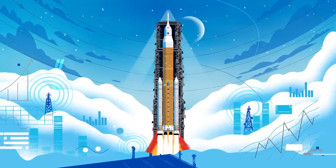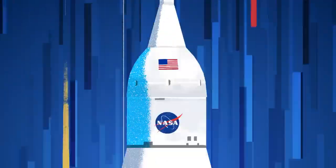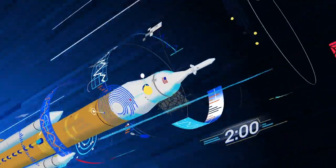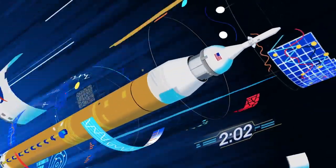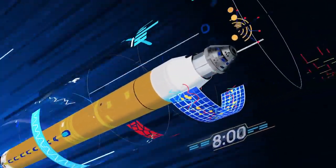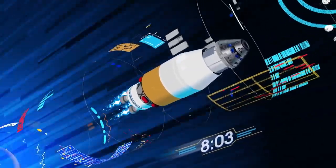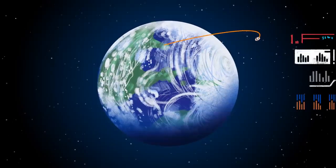All four RS-25 engines and the two solid rocket boosters come to life, thundering our crew upwards. Two minutes after ignition, the solid rocket boosters are spent and released. Eight minutes after launch, the core stage is depleted and separated. The upper stage fires briefly, placing Orion into a parking orbit around the Earth.